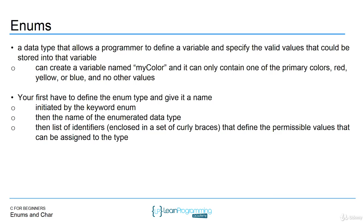You're basically saying that this enum can only be of these values. When you want to use the enum later, you declare a variable of that type. Let's see this in action. Here I'm defining an enum type called primary color — I have the enum keyword, then the name of my enum, which is primary color, and then I'm defining all the valid values for that type.